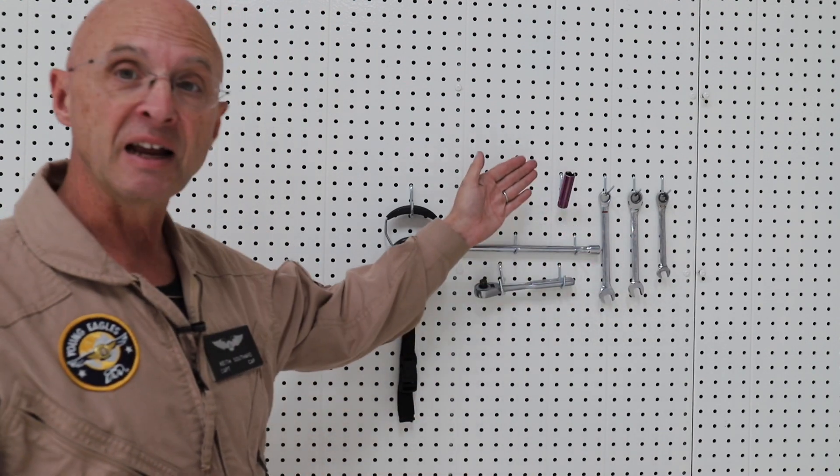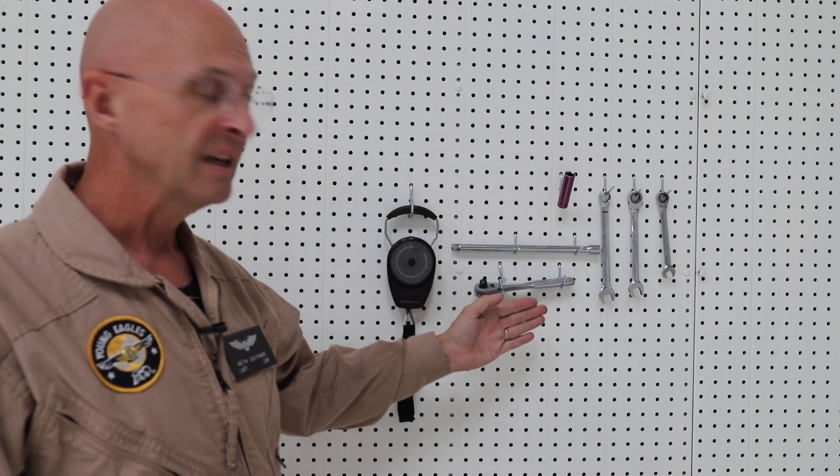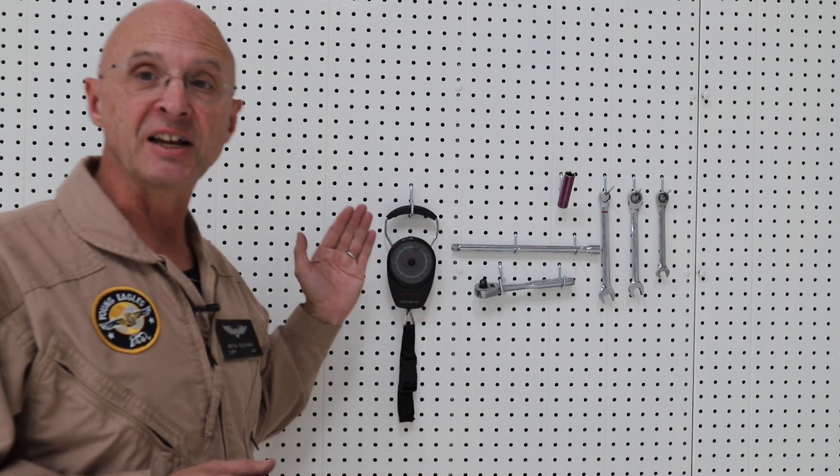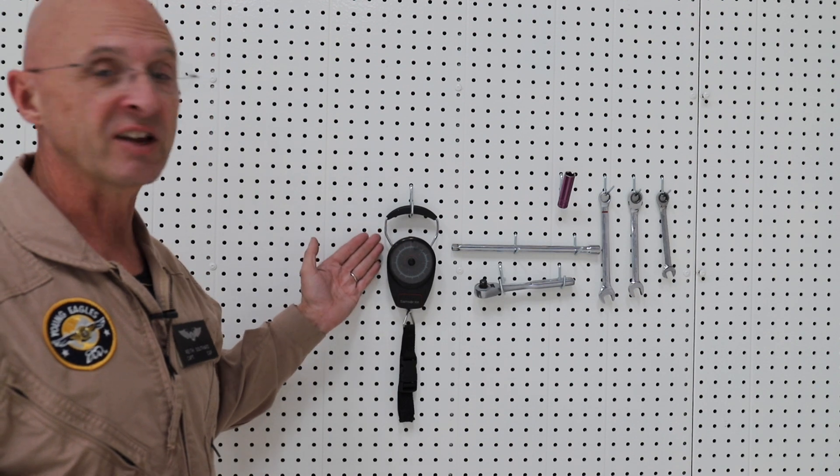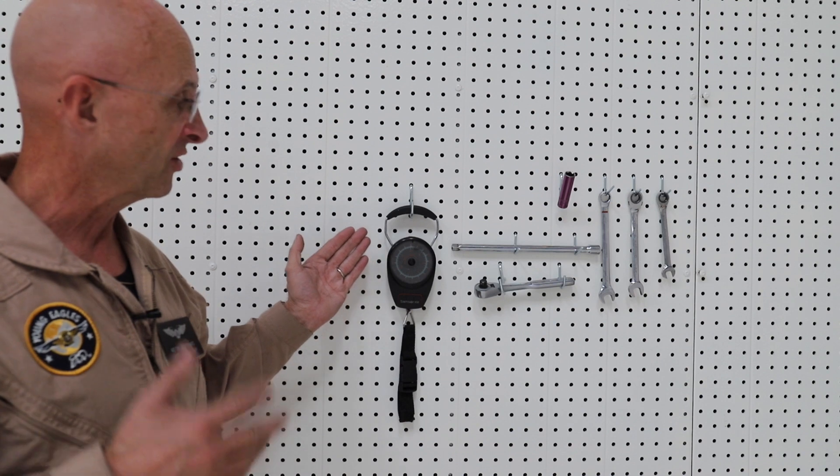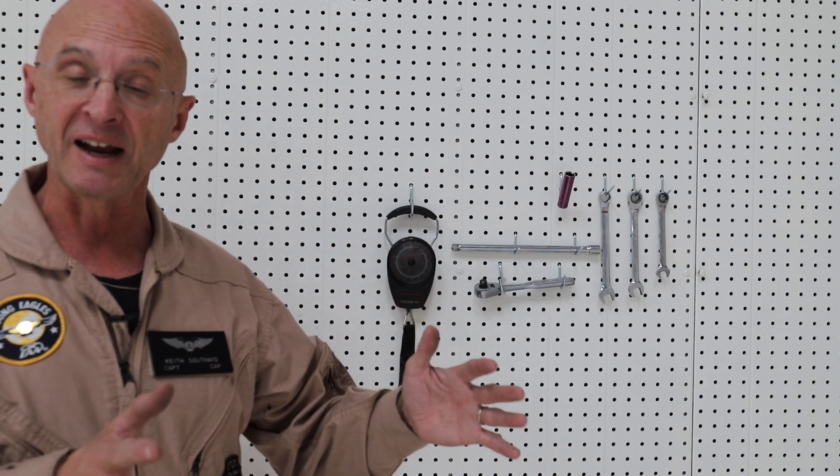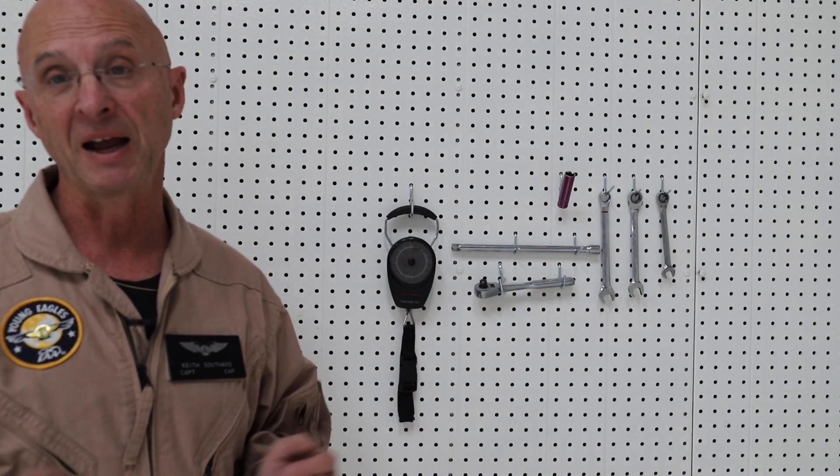You need a half inch socket, an extension, and a ratchet. And then you need a tensioning device or a way to measure the tension. In this case we just use a regular standard luggage scale that has a big enough range so that you can see that desired range, which is between 40 and 45 pounds.